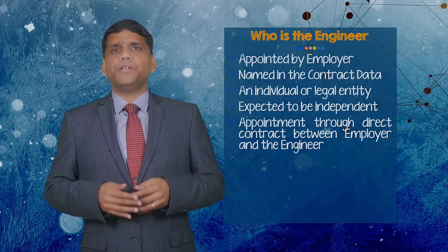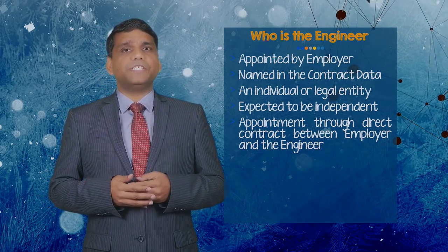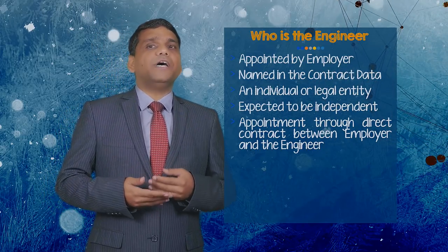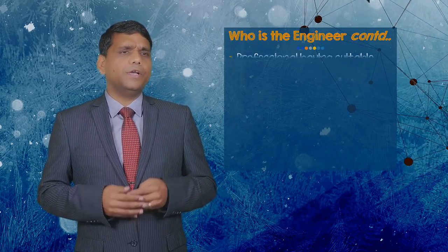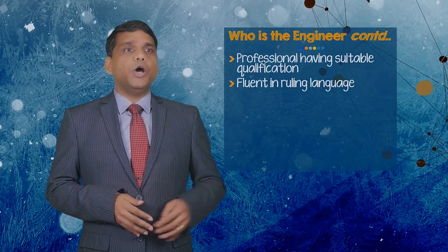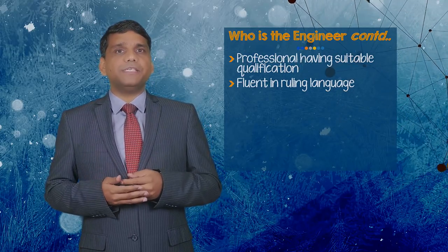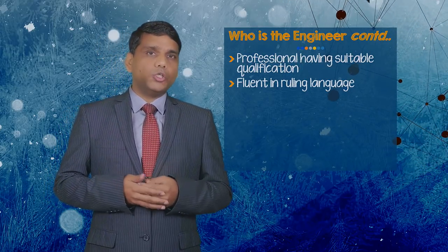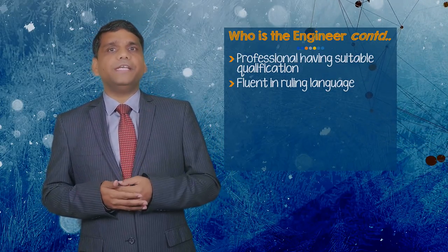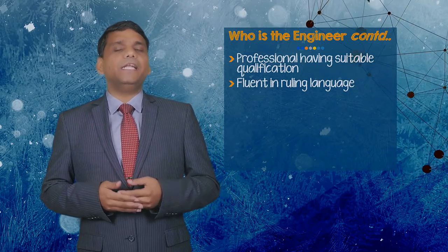The contractor will frequently accuse that the engineer is influenced by the employer's wishes and is unable to act neutrally if he is an employee of the employer. Further, sub-clause 3.1 requires that the engineer should be a professional engineer having suitable qualification, experience, and competence. Also, he should be fluent in the ruling language of the contract, which is defined in sub-clause 1.4, Law and Language, and stated in contract data.